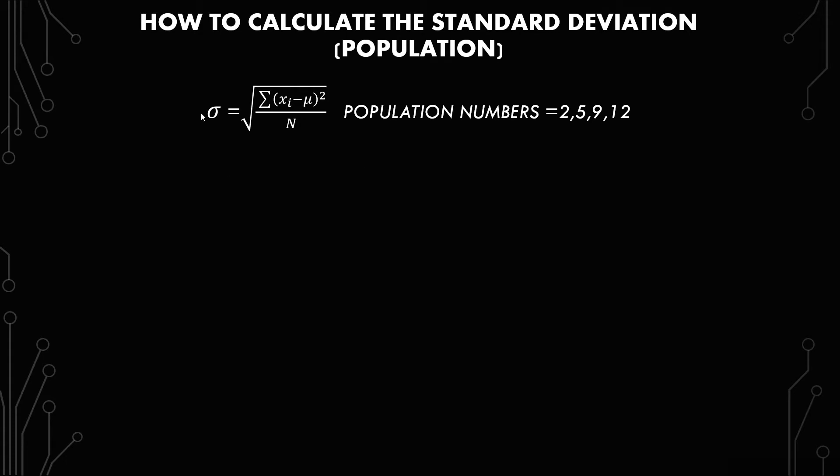The first thing I want to emphasize is in the equation here that instead of using an S or an SD, we have sigma. The second thing is instead of an x bar, we have a mu, and instead of an N minus 1, we have a capital N. And this is because we're looking at a population instead of a sample.